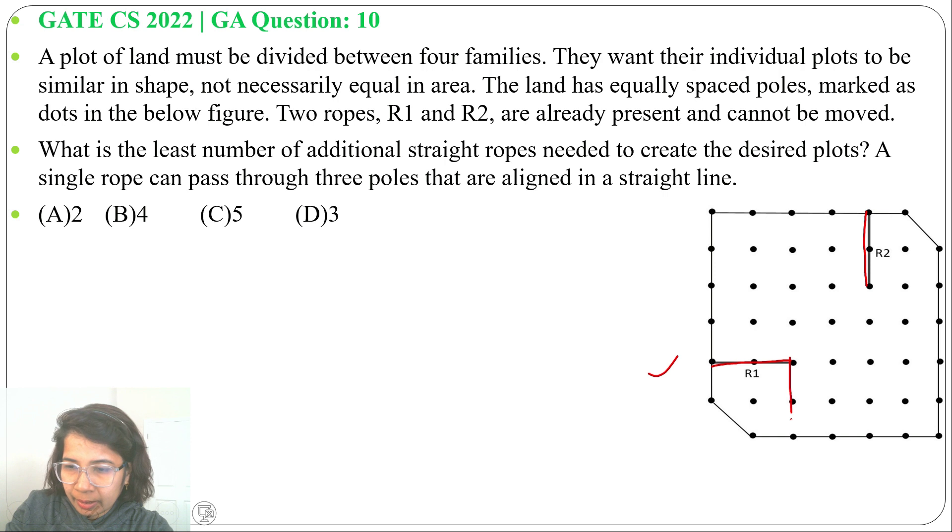If we add a rope here and here. This is plot 1, plot 2, plot 3 and plot 4. Now plot 1, 2, 3, 4 all are in equal shape. All are like this. All have five sides.